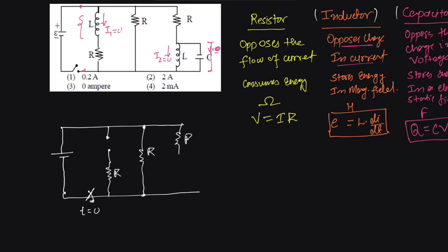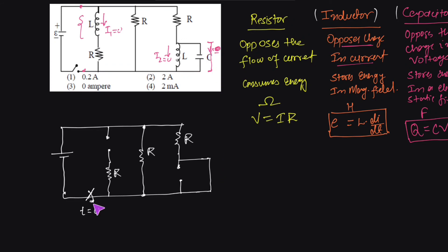The capacitor tries to maintain zero voltage by behaving like a short circuit, because the voltage drop across a short circuit is zero. So the capacitor is replaced with a short circuit in the redrawn diagram. This gives us the equivalent circuit just after the switch is closed — this is the transient period circuit diagram.